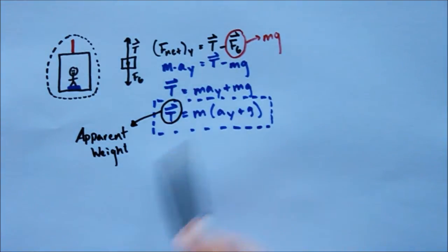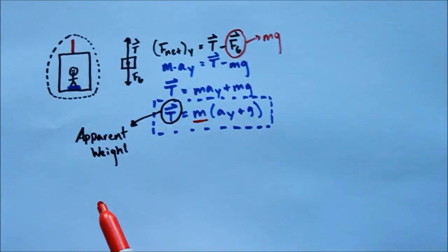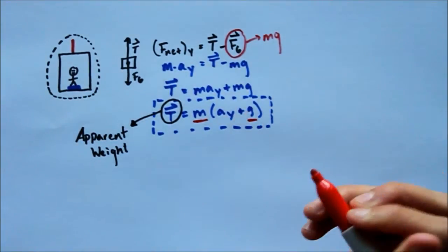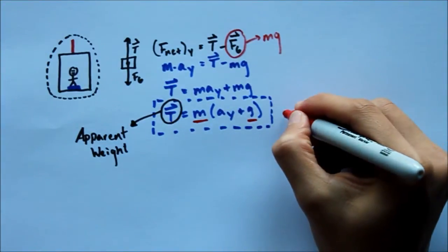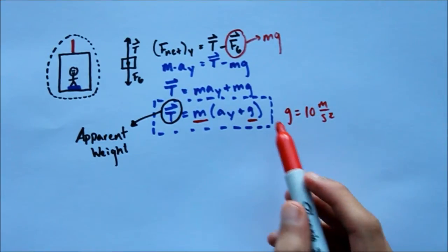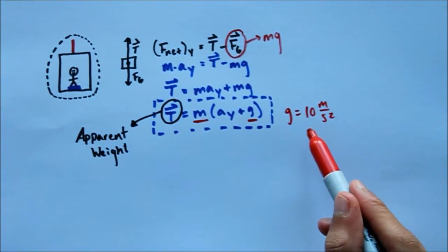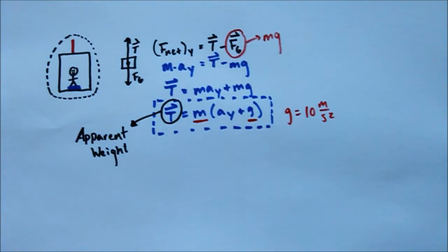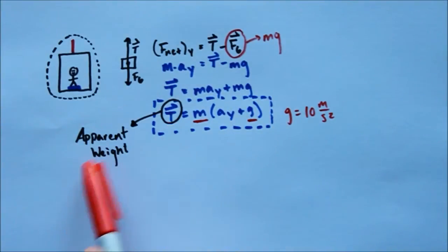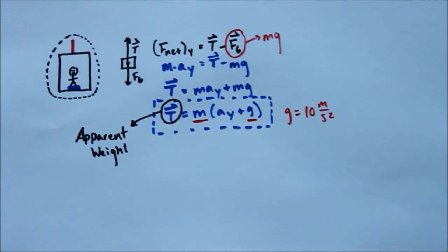Let me analyze this equation. I know my mass is not going to change — the mass of your person is always going to be the same because mass is constant. And g is always going to be 10 meters per second squared of acceleration. It's important not to confuse g with gravity, because gravity is negative g — g itself is just 10. So I have those two constants which aren't going to change my apparent weight at all. The only thing that will is my acceleration in the y direction.